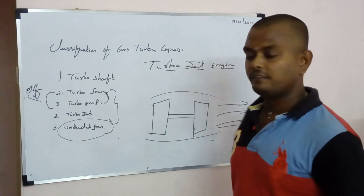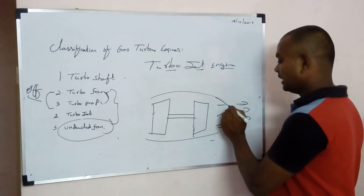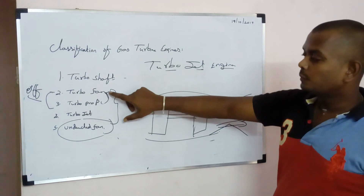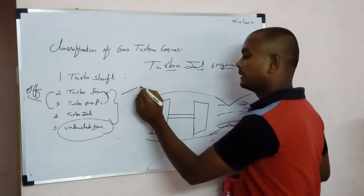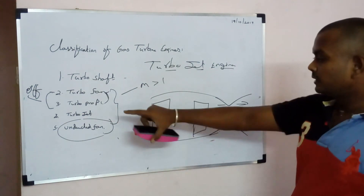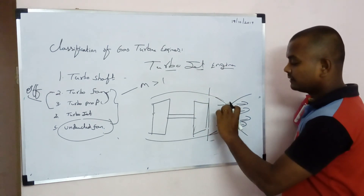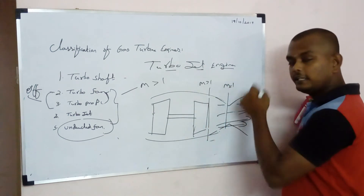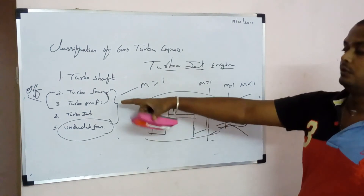The turbo jet engine uses a convergent-divergent nozzle. The turbo shaft doesn't have a nozzle, whereas turbo fan and turbo prop have only a convergent passage since they fly at Mach numbers less than 1. For higher speed in a turbo jet, you need a convergent-divergent passage: the subsonic flow exiting the turbine enters the convergent section and becomes sonic (M=1), then the divergent passage accelerates it further to supersonic (M>1).